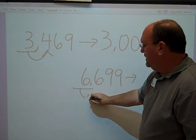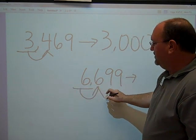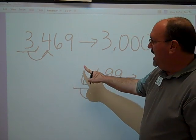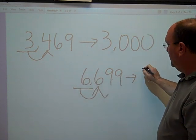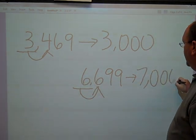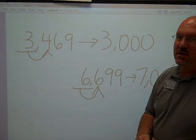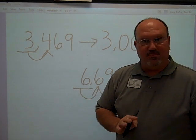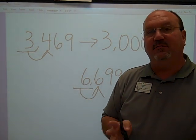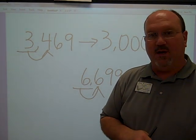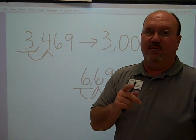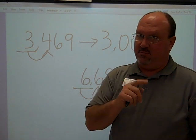Underline the digit, look next door. If it's five or bigger, add one more. Everything after is a zero to the core. That is rounding using the rounding chant. You can find the music on the website. This is Homework Helper for rounding. Keep practicing.